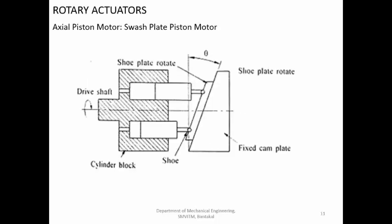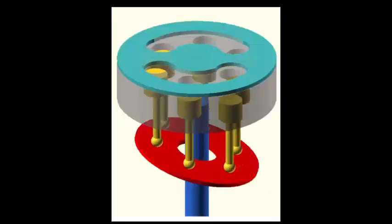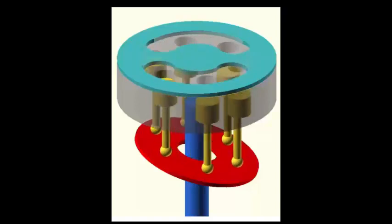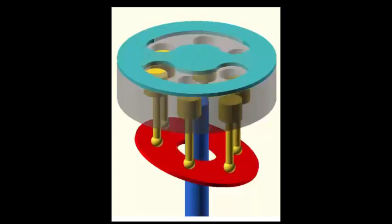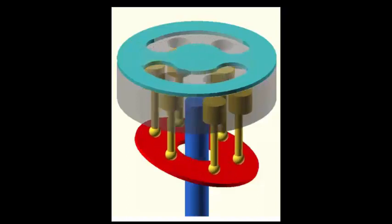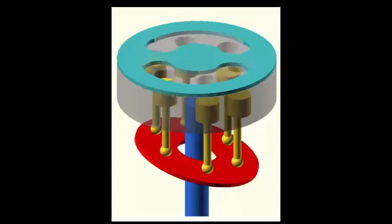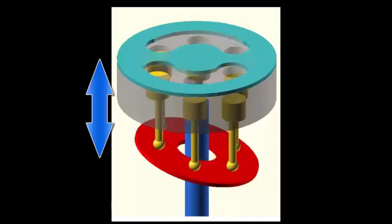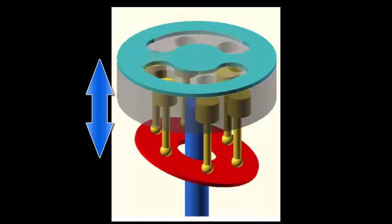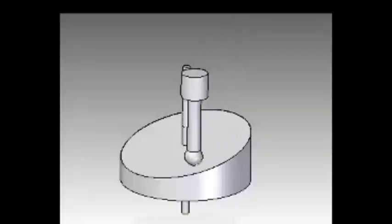Next one is the piston motors. We have already discussed what is a piston and cylinder arrangement. A piston can reciprocate because you are supplying high pressure hydraulic fluid. Now it is possible to use the same piston and cylinder arrangement but of a very small size to get a continuous rotary motion. So if you are using the pistons to get a rotary motion then it is called a piston motor. The pistons are simply reciprocating but because of the arrangements made, the output shaft has a rotary movement.